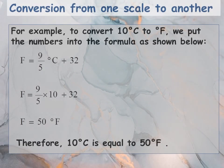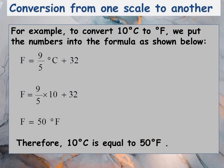Let us take an example. To convert 10 degree Celsius to degree Fahrenheit, we put the numbers into the formula as shown. You will find that 10 degree Celsius is equal to 50 degree Fahrenheit.